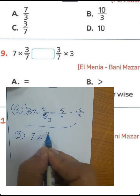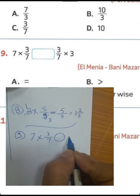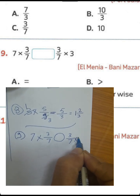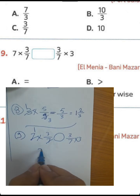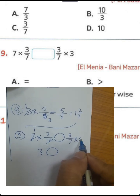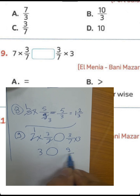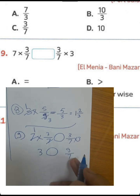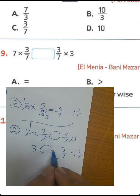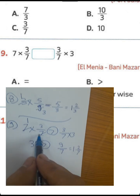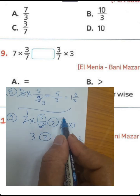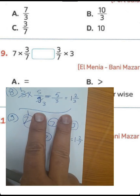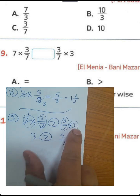Question 9: 7 times 3 over 7, or 3 over 7 times 3. We can divide: 7 divided by 7 is 1, and 1 times 3 equals 3. The other expression: 3 times 3 equals 9 over 7. You can convert 9 over 7 to a mixed number — write 1 with remainder 2 — then 3 is greater. Or you can cancel 3 over 7 by 3 over 7, then 7 will be greater than 3.